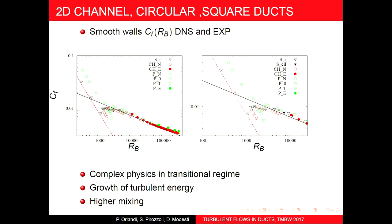Zooming into the transitional region, we did a large number of simulations with the square channel, which is the main topic of this lecture. We have square channel data with open symbols done in Cartesian coordinates and solid symbols done in polar coordinates, and we will see why we use both.